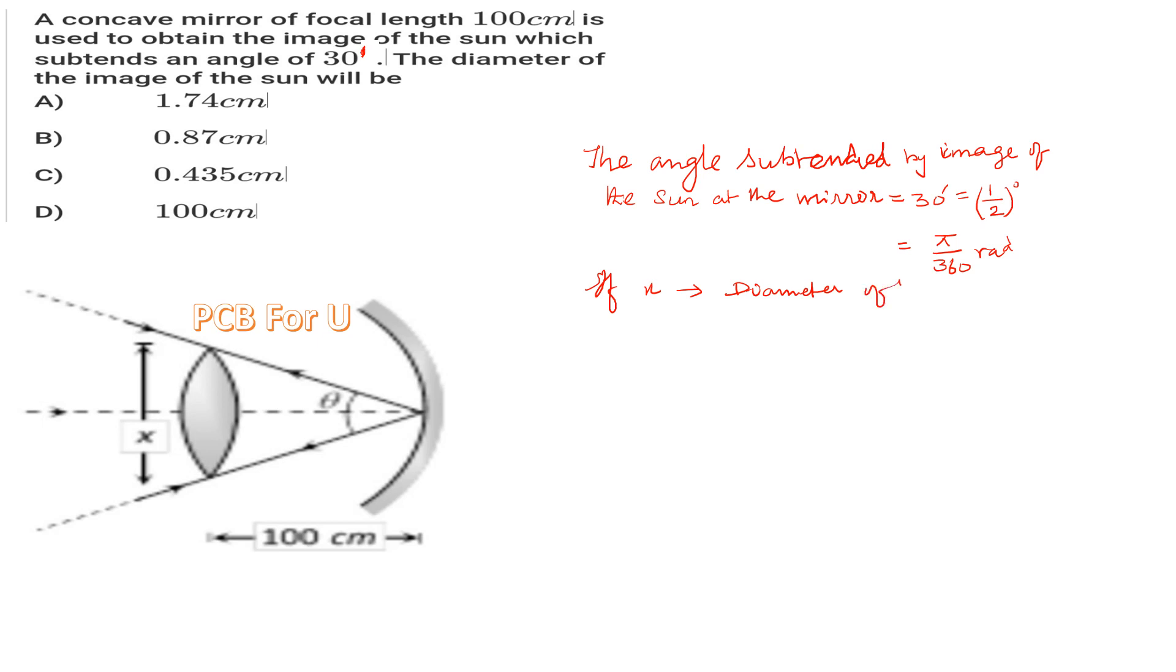So if x equals π/360, then the diameter of the image of the Sun will be in our image of the Sun...